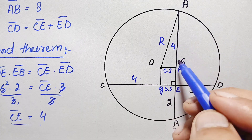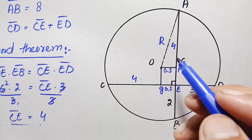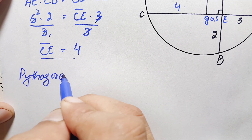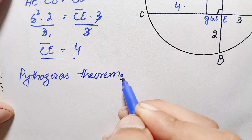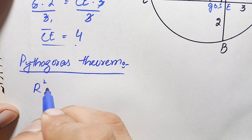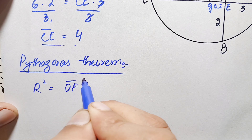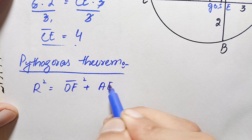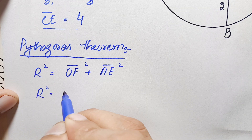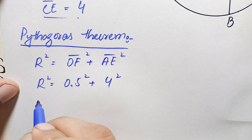Looking at right angle triangle AOF, we have been given two sides: the base and the perpendicular. Using the Pythagorean theorem, we can find the value of radius r. The Pythagorean theorem states that the hypotenuse squared is equal to base squared plus perpendicular squared. Here our hypotenuse is r, so r squared equals OF squared plus AF squared.